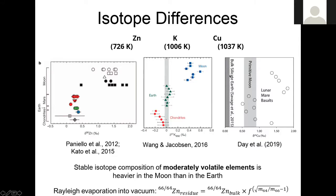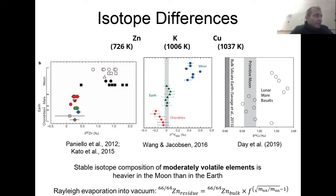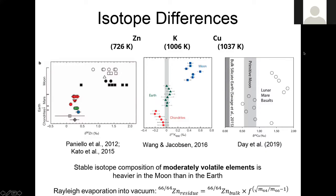Taken together, these observations paint a picture: lunar material has many similarities with Earth's mantle material — particularly identical oxygen isotopic signatures — but it is depleted in volatile elements, and those volatile elements are enriched in heavy isotopes. This suggests the Moon is mostly made of Earth mantle material that was heated to around 1600 K, simultaneously explaining both the similarities and differences with Earth material. The big question is how this is possible in the context of moon formation.